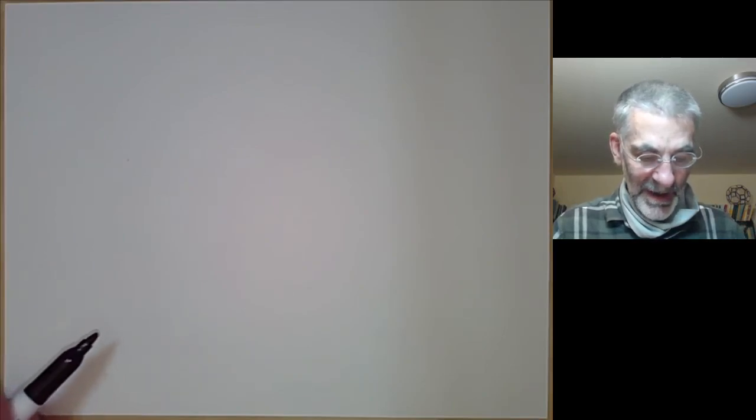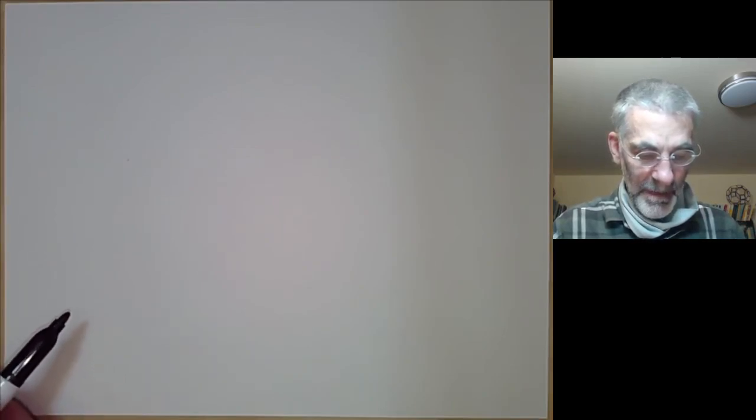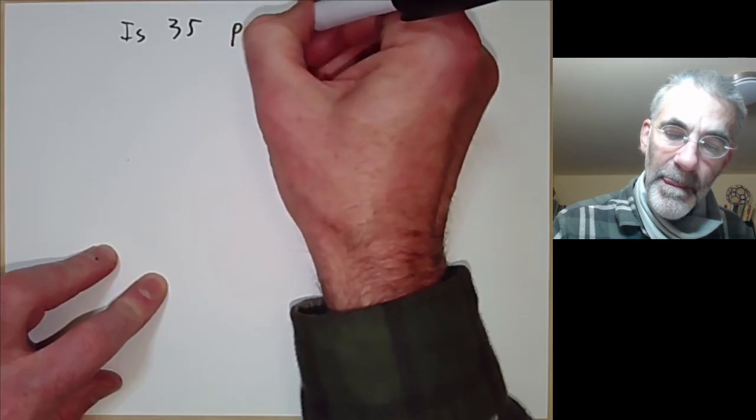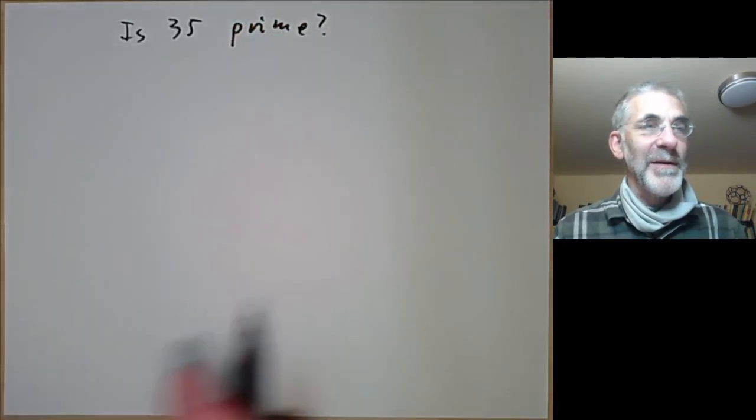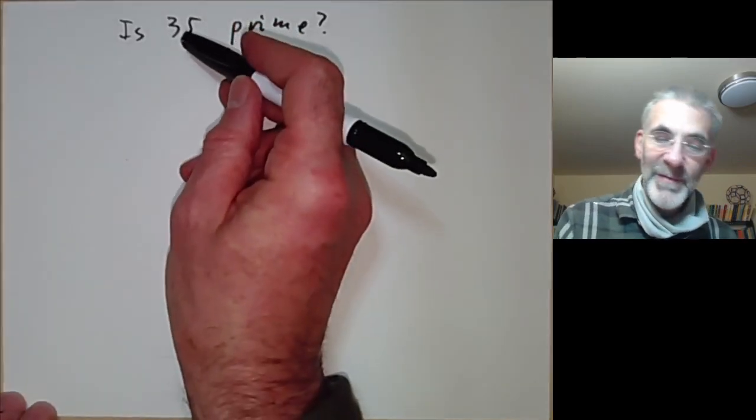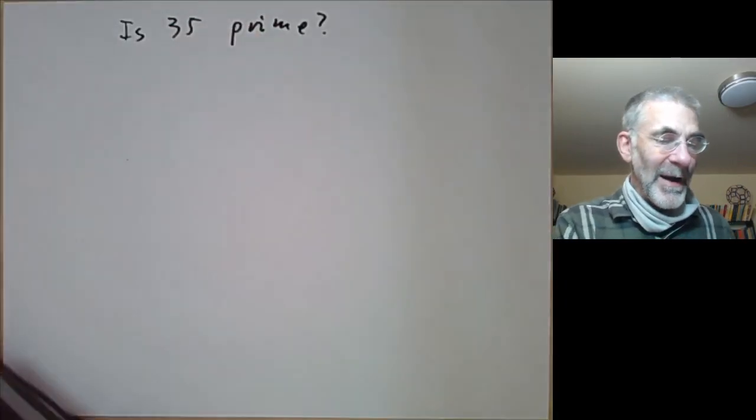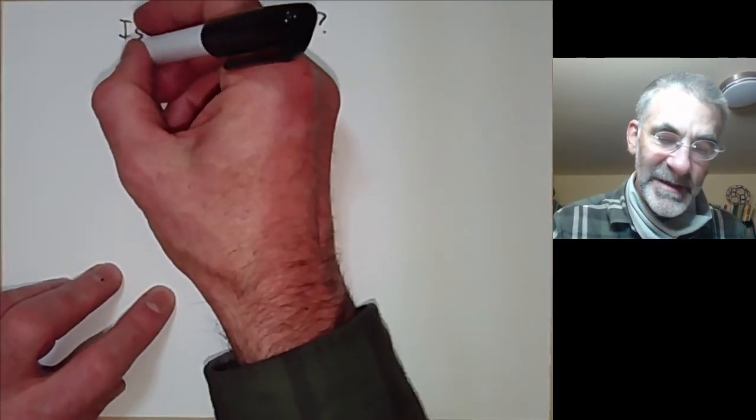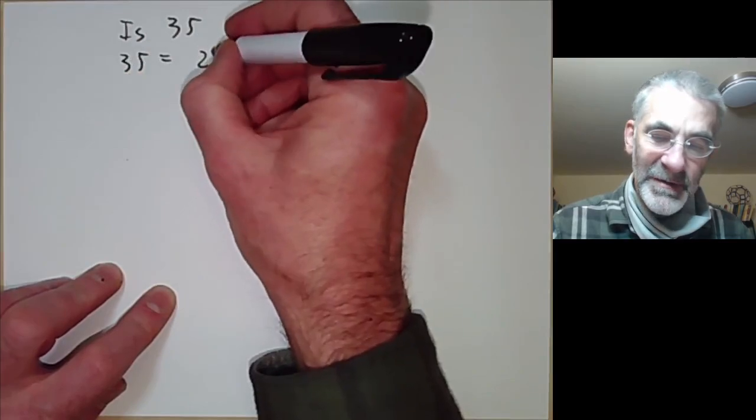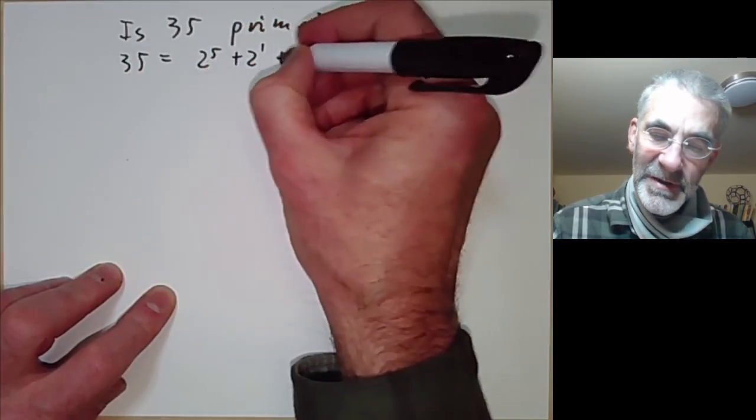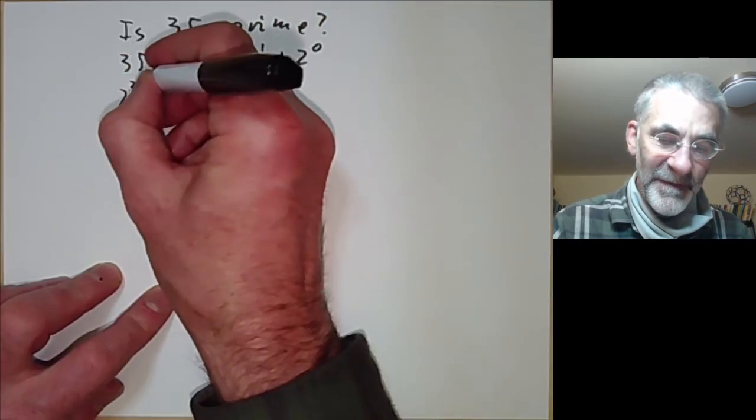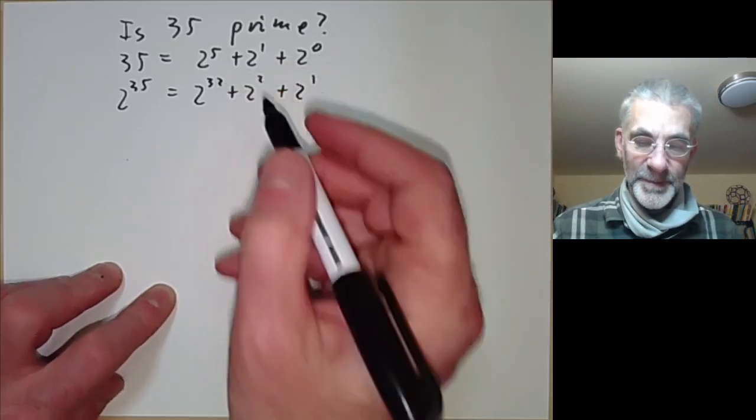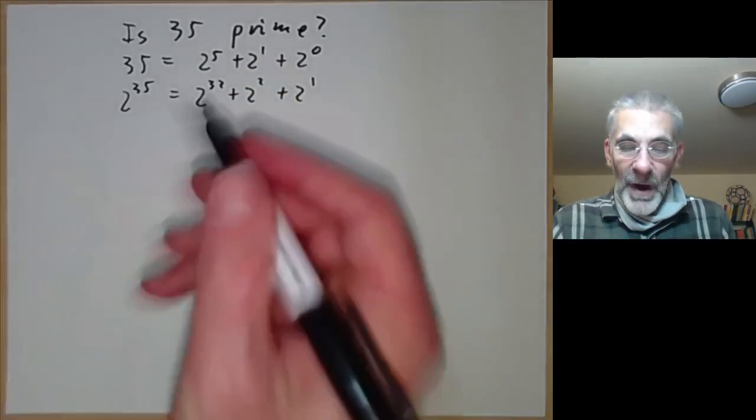So let's do an example of this. Let's try and work out whether 35 is prime. And you may think this is a kind of stupid question. It's obviously not prime because it's divisible by 5. But let's pretend we haven't noticed this and try and use this method to test it. So what we do is we write 35 in binary. It's 2 to the 5 plus 2 to the 1 plus 2 to the 0. So 2 to the 35 equals 2 to the 32 times 2 squared times 2 to the 1.